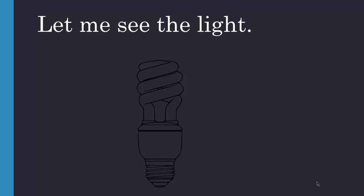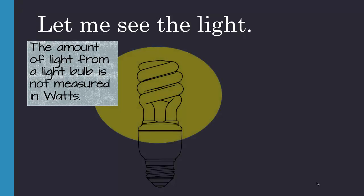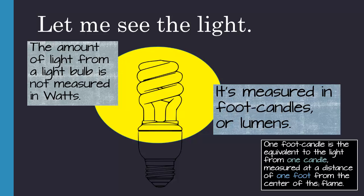Let me see the light. The amount of light from a light bulb is not measured in watts. It's measured in foot candles, or what we would say is lumens. One foot candle is the equivalent to the light from one candle measured at a distance of one foot from the center of the flame. So lumens actually comes from a candle.